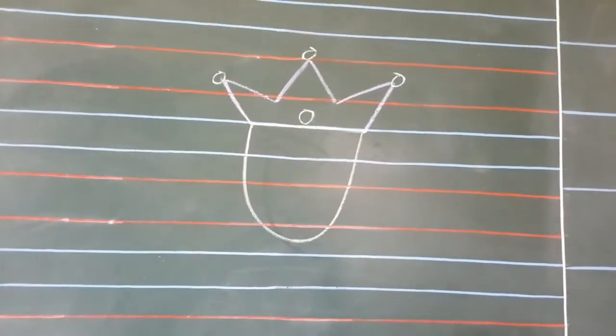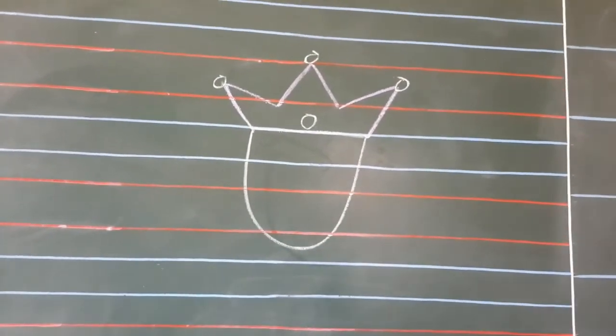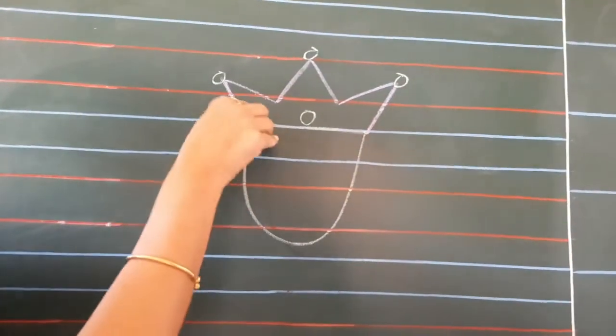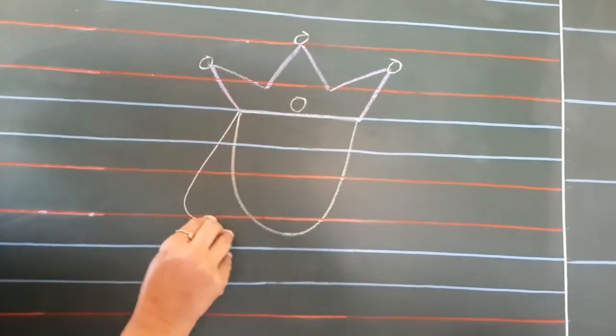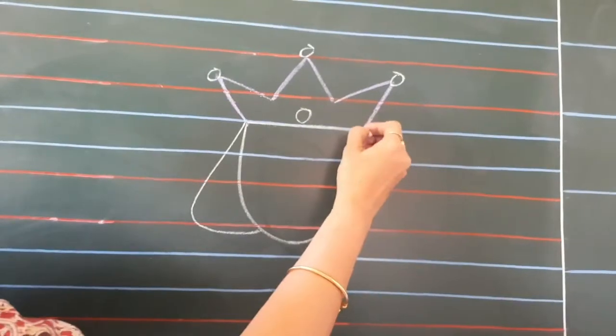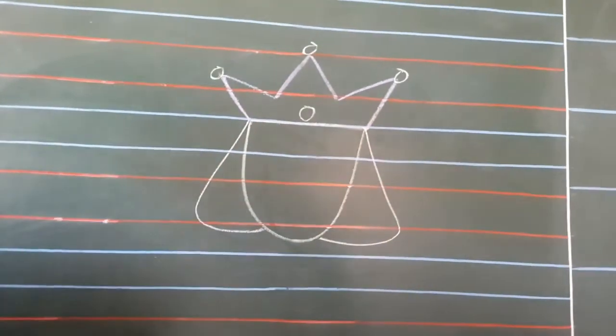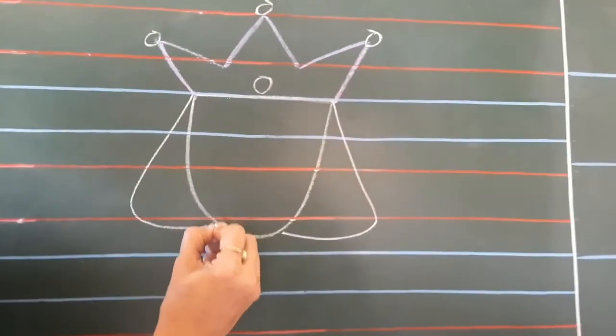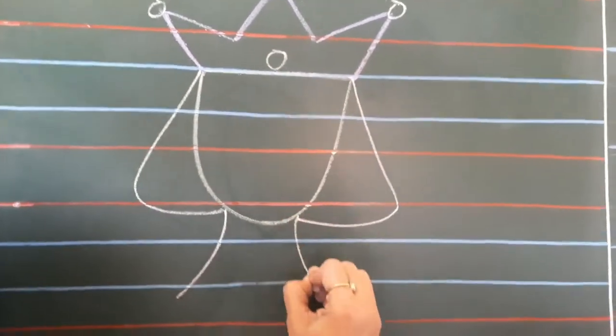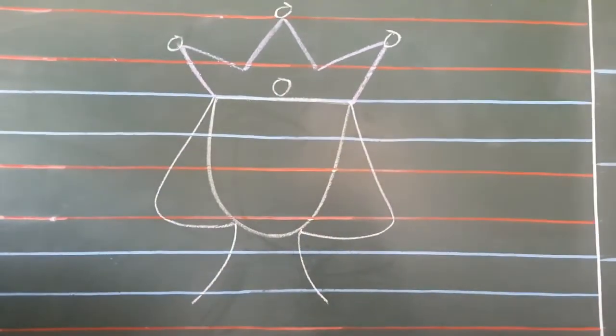Then, we will draw the hair of the queen. So, for that, from here, slant line and a curve. Other side also, slant line and a curve. And down, we will draw the neck part.